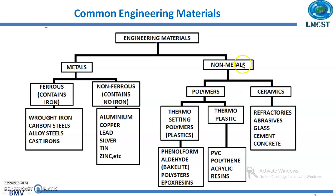In the non-metal category, we have polymers and ceramics. These polymers are thermosetting polymers, that is plastics, and thermoplastic. The thermosetting polymers are classified as phenol formaldehyde, polyesters, and epoxy resins. And the thermoplastics include PVC, polythene, and acrylic resins.